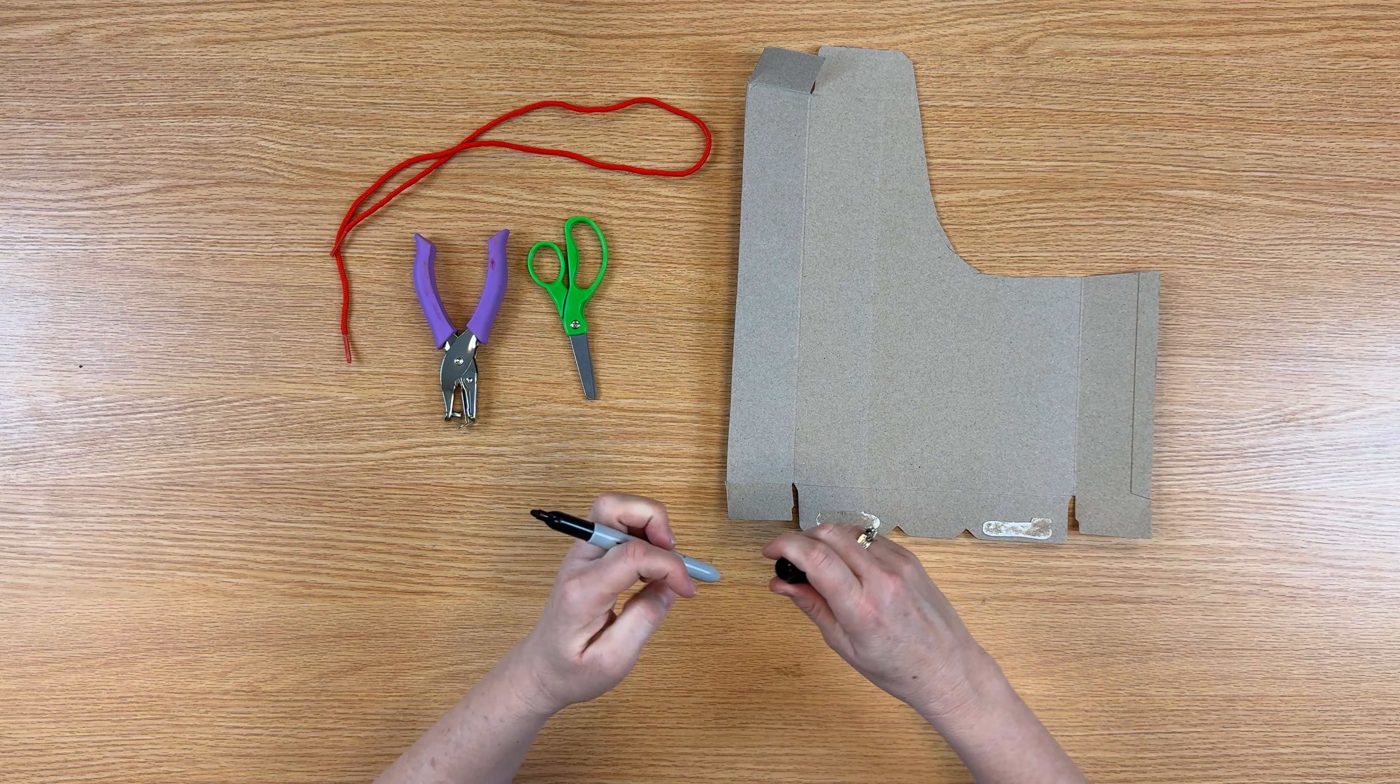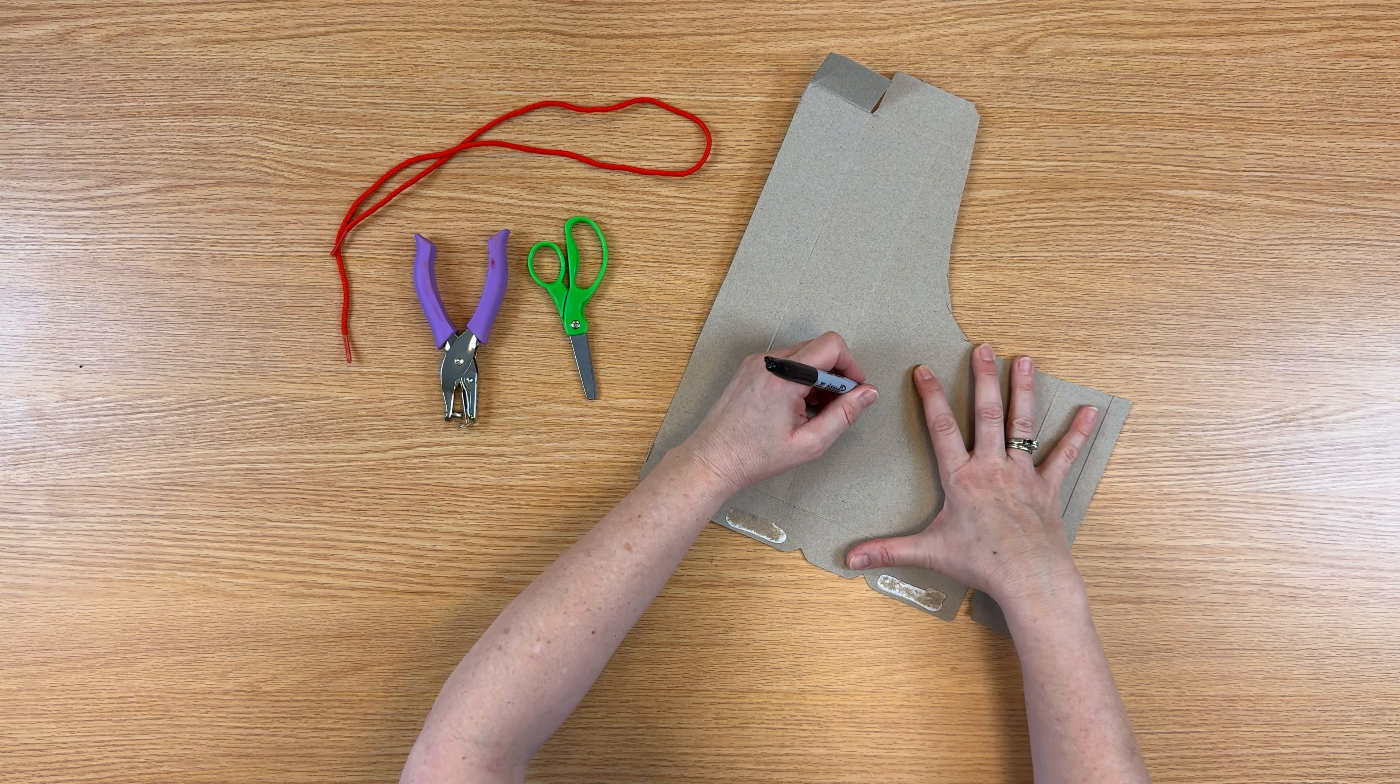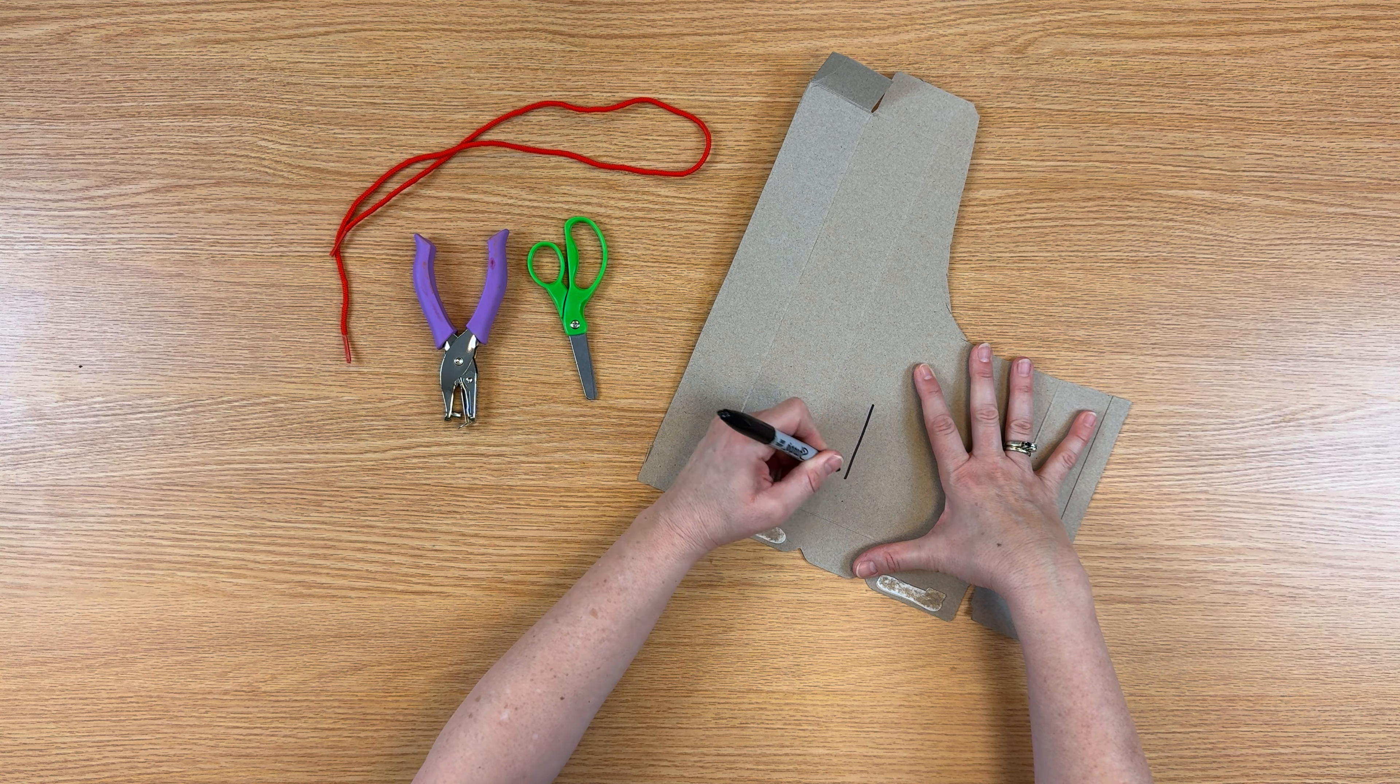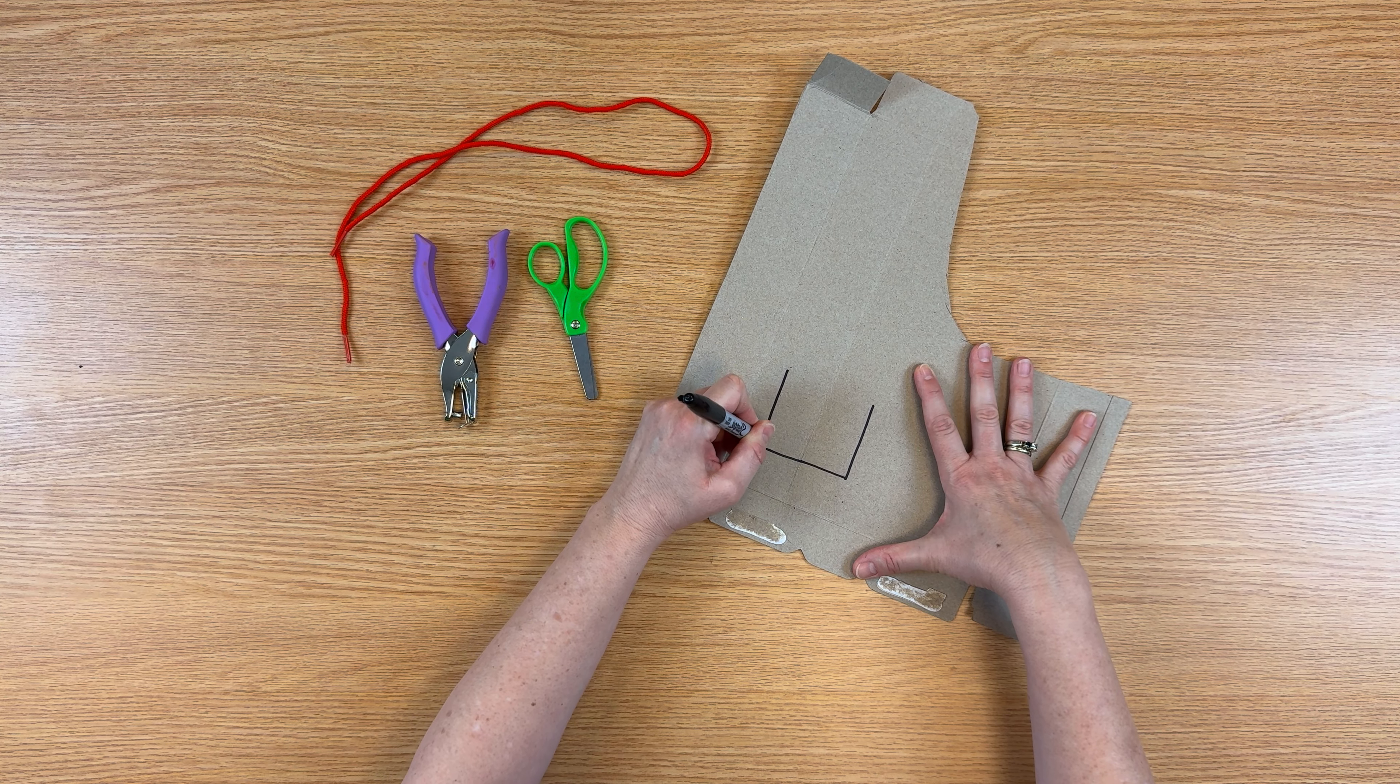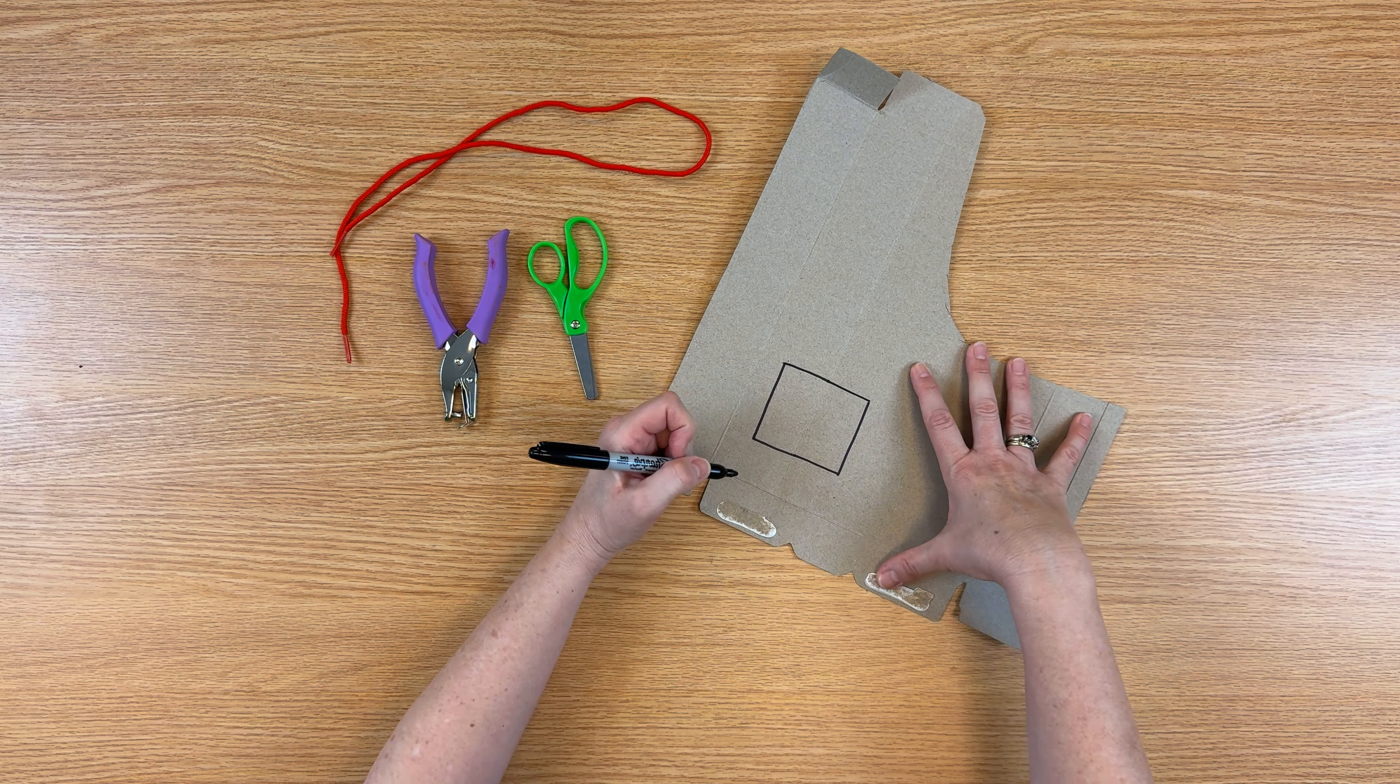So the first thing we'll do is just start by drawing a shape on the box. I encourage you to have your child draw the shape and you start with a basic shape, and as they get better with their scissor skills you can do something a little more intricate with more curves.